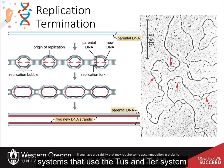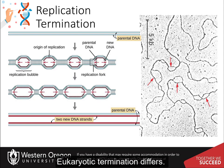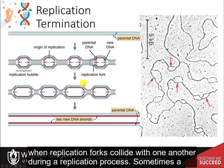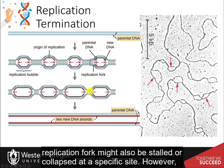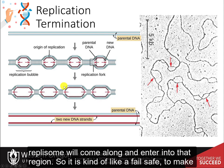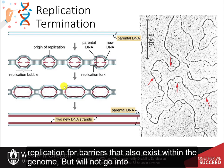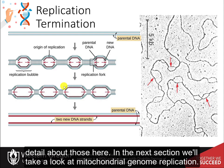Unlike prokaryotic systems that use the TUS/TER system to terminate replication in a distinct region of the chromosome, eukaryotic termination differs. Replication termination typically occurs when replication forks collide with one another. Sometimes a replication fork might be stalled or collapsed at a specific site; however, replication within that region can be reactivated when another replisome comes along and enters that region — a kind of fail-safe to ensure all regions of the genome get replicated. There are other more complex replication fork barriers that exist within the genome, but those will not be covered here.